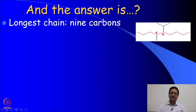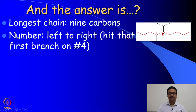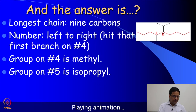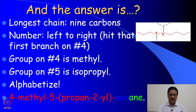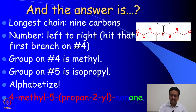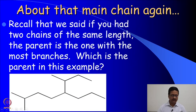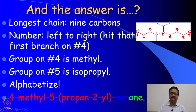What we should try is to first identify the longest chain in this molecule. When we try to see that, what we find is — if we are trying to number it from either side, either from the left corner or from the right corner, we get the same thing: 1, 2, 3, 4, 5, 6, 7, 8, and 9.